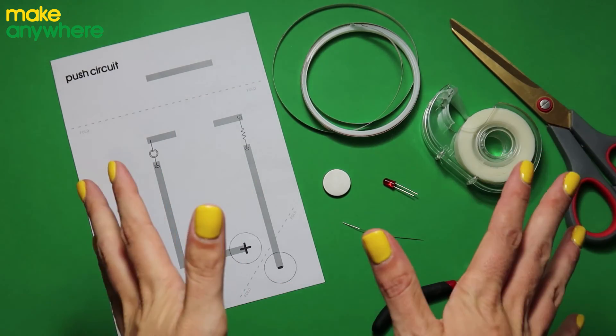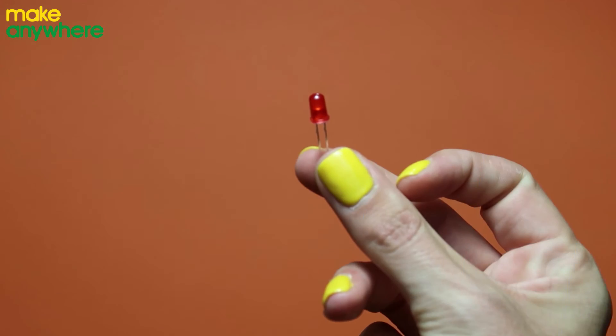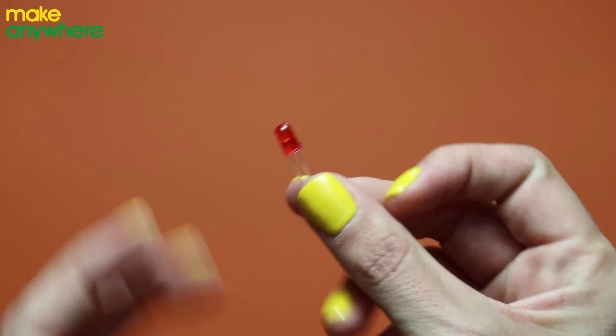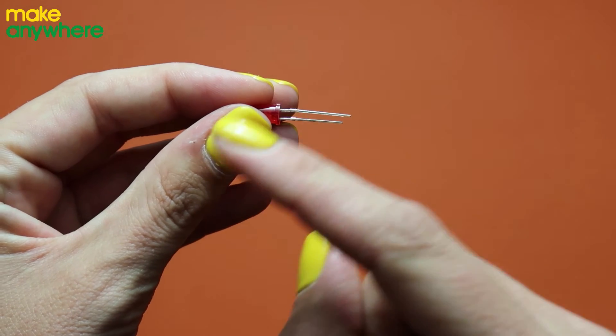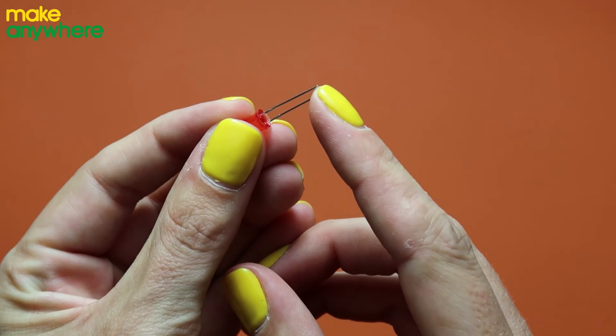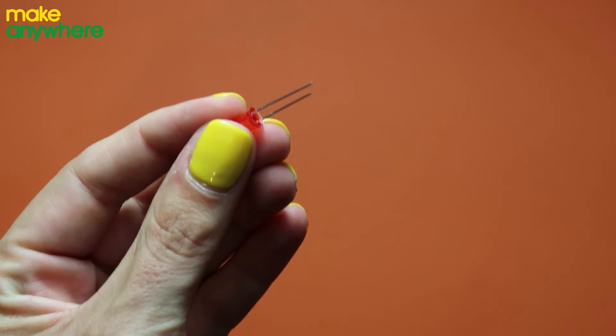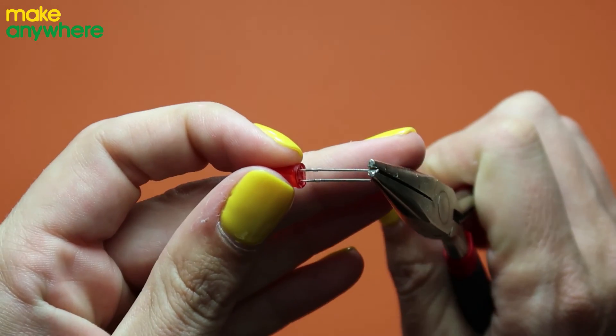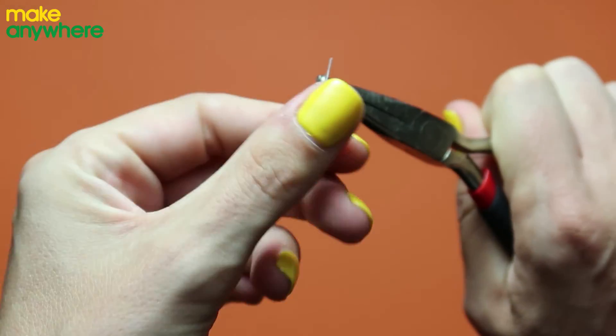Right let's get making. The first thing we're going to need to do is prepare your LED. We're going to take the long leg and we're going to turn it into a circle and we're going to straighten this negative short leg straight out. Take your pliers holding the end and wrap.